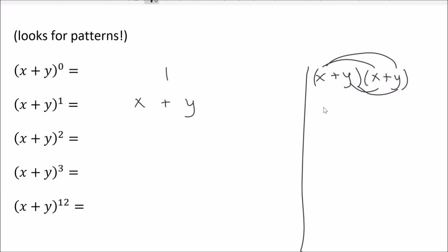We learned back in algebra we can FOIL — I'm going to call it distributing. We distribute that over and over. x times x is x squared, x times y gives us xy, y times x gives us xy — so that's two xys. And y times y gives us y squared. So there's our simplified form.